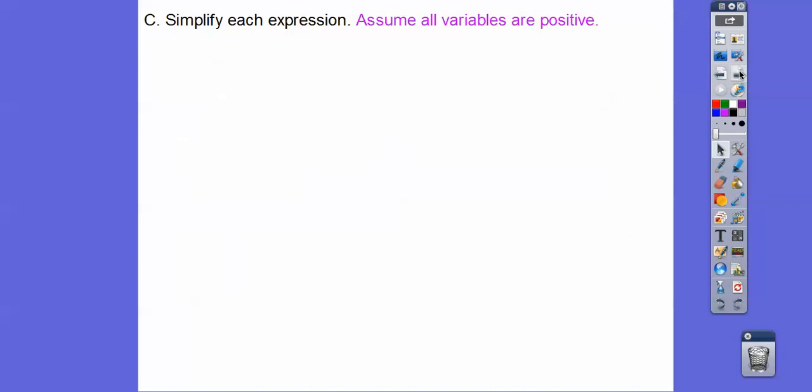All right, let's simplify the expressions. Assume that all variables are positive. So here we have the cube root of xy to the ninth. So it's that xy to the inside power over outside index. So that's xy to the third, and then you can write it like that, or each piece to the third.